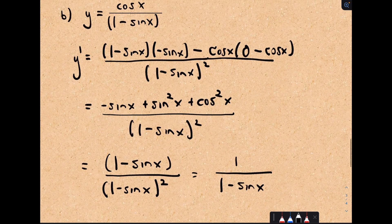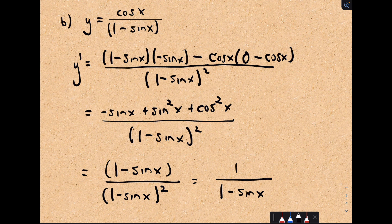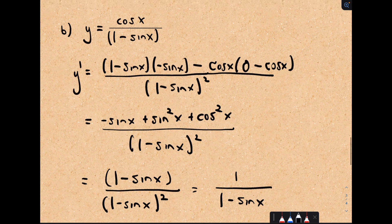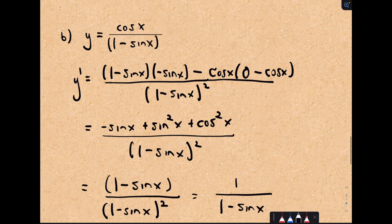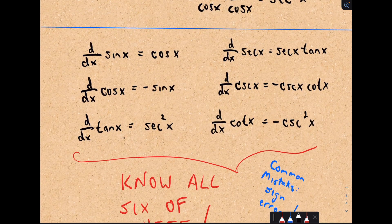Keep an eye out for identities when taking derivatives involving trig functions, because a lot of times you can simplify things down. If your answer doesn't look like the solution, try identities. That's the moral of the story: you have new derivative formulas to use, but still apply the product, quotient, and chain rules. You just have new basic formulas to work with.